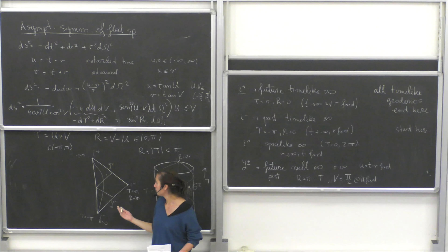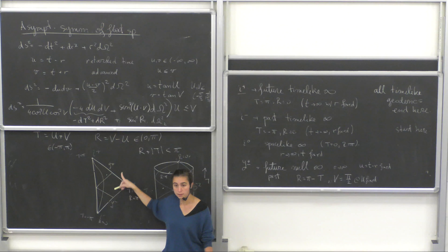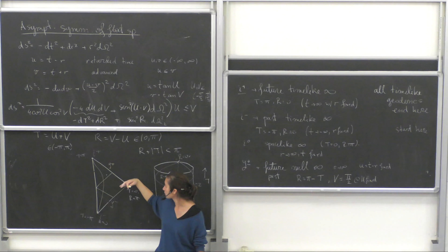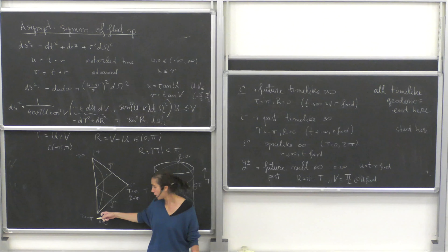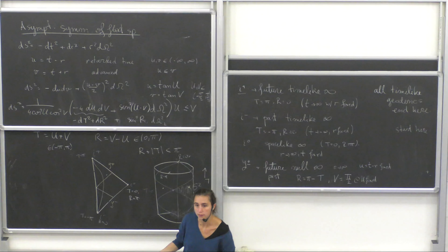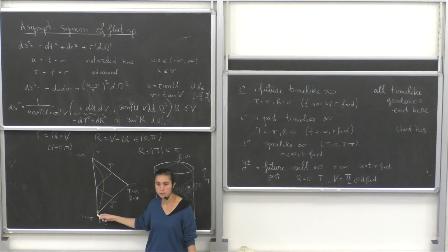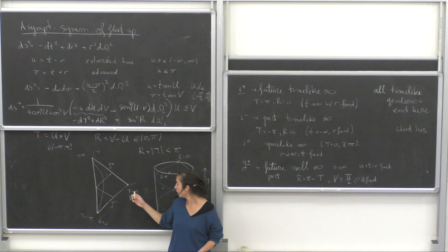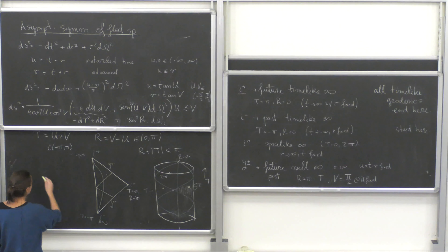This Penrose diagram holds for empty Minkowski. When you add matter you can still define spatial infinity and the null infinities ℐ±, but you cannot require the structure to be vacuum-like near i± (timelike infinity) because you have matter sitting there. When studying asymptotic structure of flat spacetimes one focuses on spatial infinity or null infinity. Also, near i⁰ with matter the conformally compactified manifold is not differentiable — physically this is because i⁰ is approached from all directions simultaneously, giving direction-dependent structure.